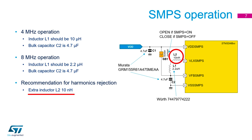It allows a smaller footprint, especially a very low profile inductor. For all packages it is advised to add an extra 10 µH inductor L2 in series with the 10 µH or 2.2 µH one. This is needed to filter the RF harmonics that can degrade the receiver performance. Always check if the SMPS frequency isn't at high levels in the output spectrum. You will find them at 8 or 4 MHz from the center frequency.